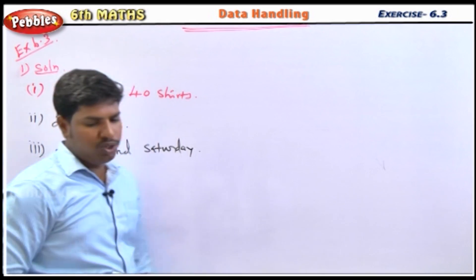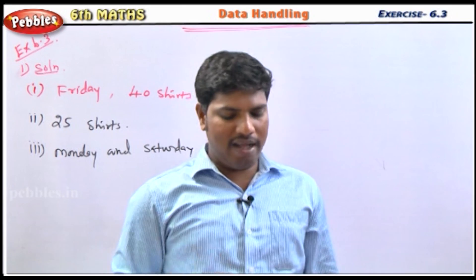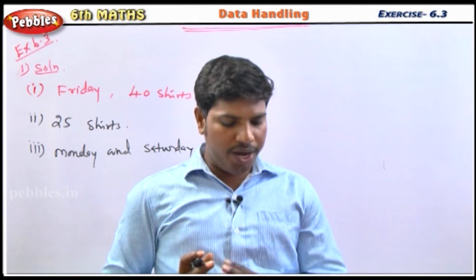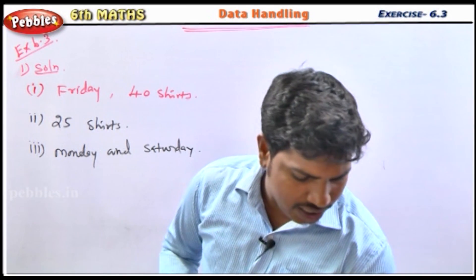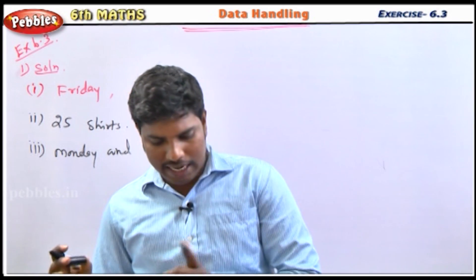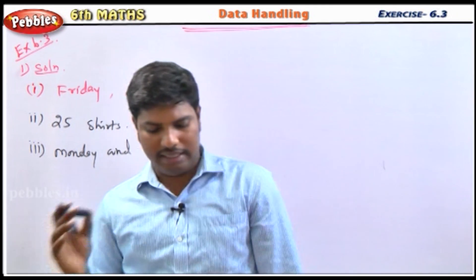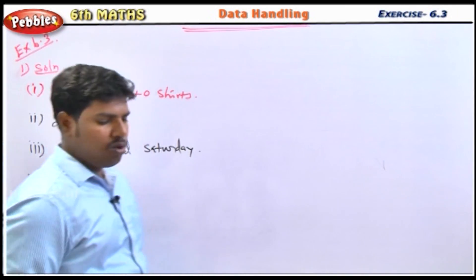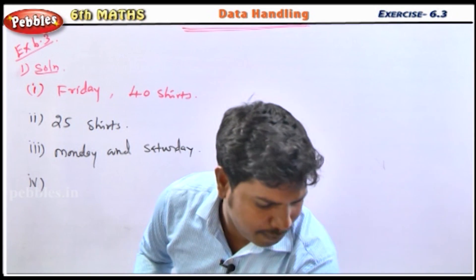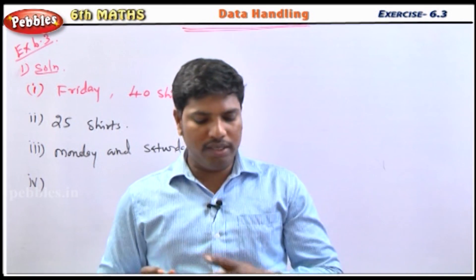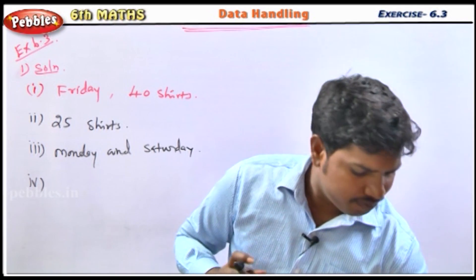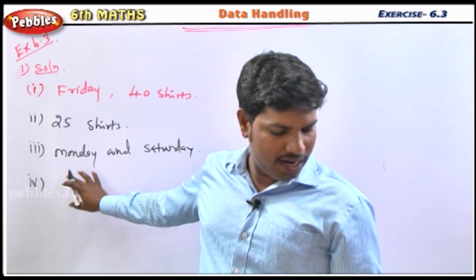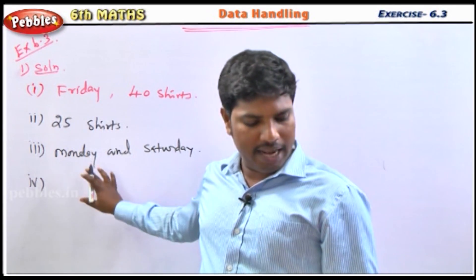The fourth question: what information is given by the bar graph? The bar diagram represents the number of shirts produced in a tailoring unit in 6 days. That is the answer to the fourth question.